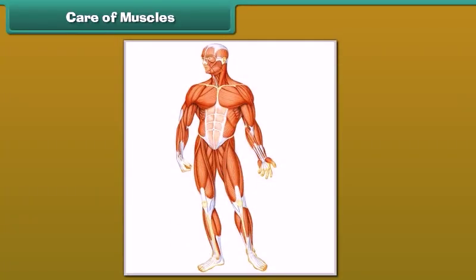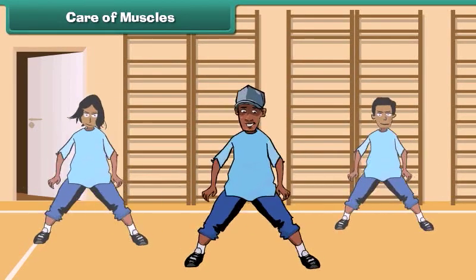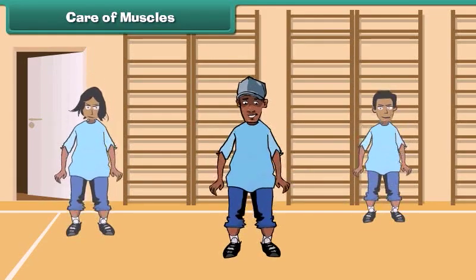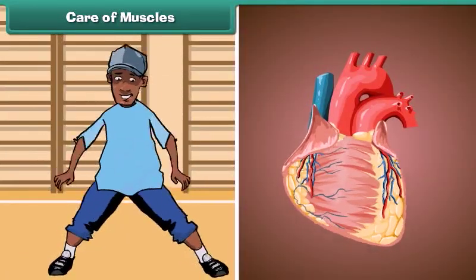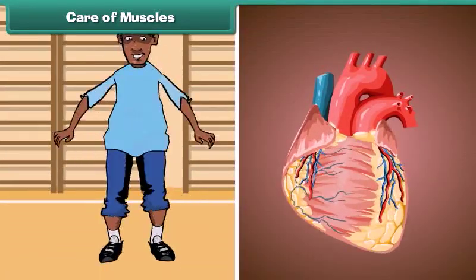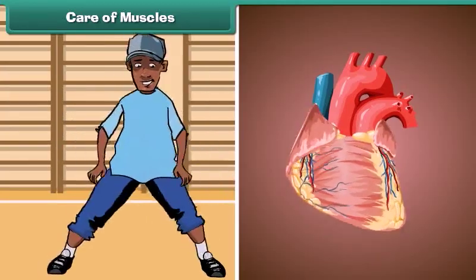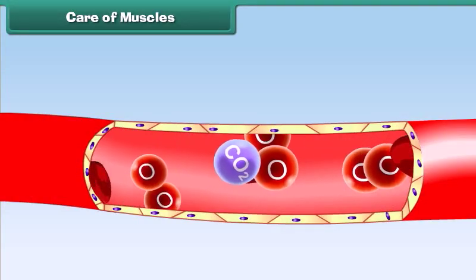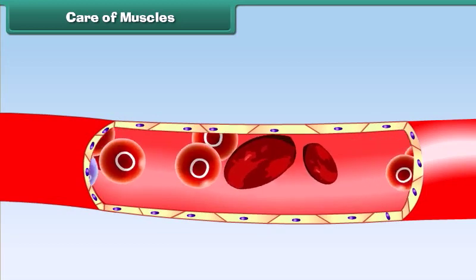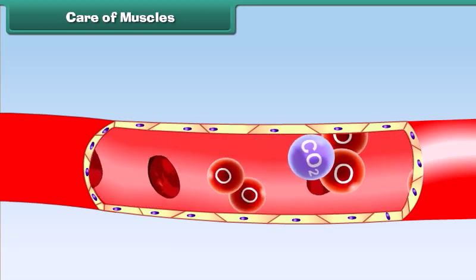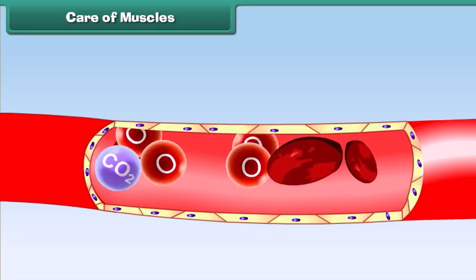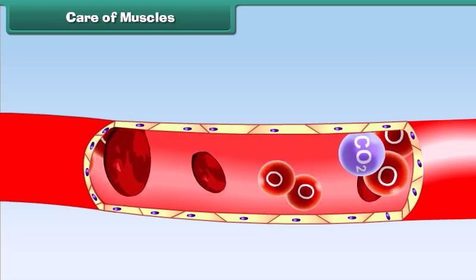For good health, it is important that our muscles are strong and functioning efficiently. Regular exercise makes our muscles strong. The rate of the heart's action increases during exercise and we breathe faster. As a result, plenty of oxygen and nutrients in the blood are supplied to all parts of the body, which makes us feel refreshed and lively.